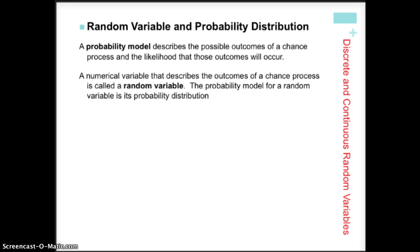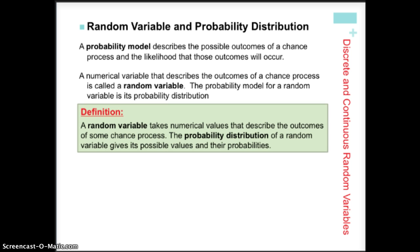A probability model is where we have all the possible outcomes and the probabilities associated with each one of those outcomes. When we talk about a random variable, it's a numerical variable that gives us those possible outcomes, and we can create a probability distribution — either a table or a graph — of the possible outcomes as well as the probability with which each of those occurs. Pause the video if you'd like to read or take notes on the formal definitions for random variable and probability distribution.